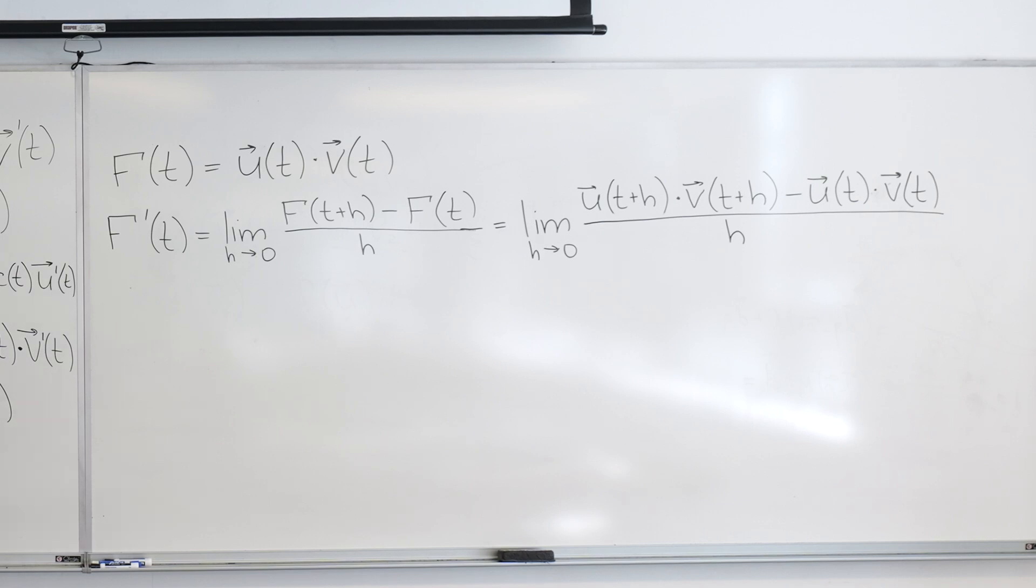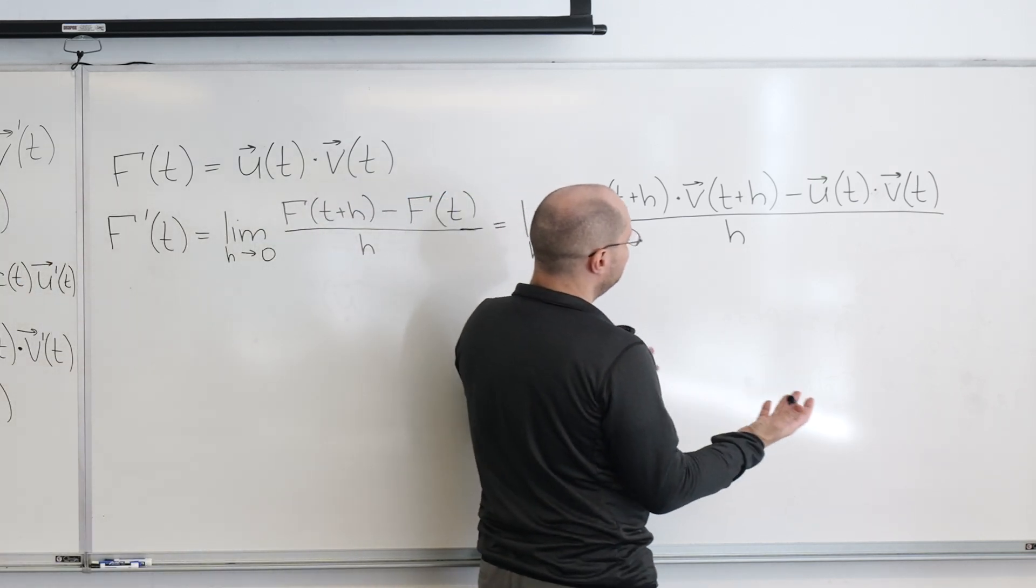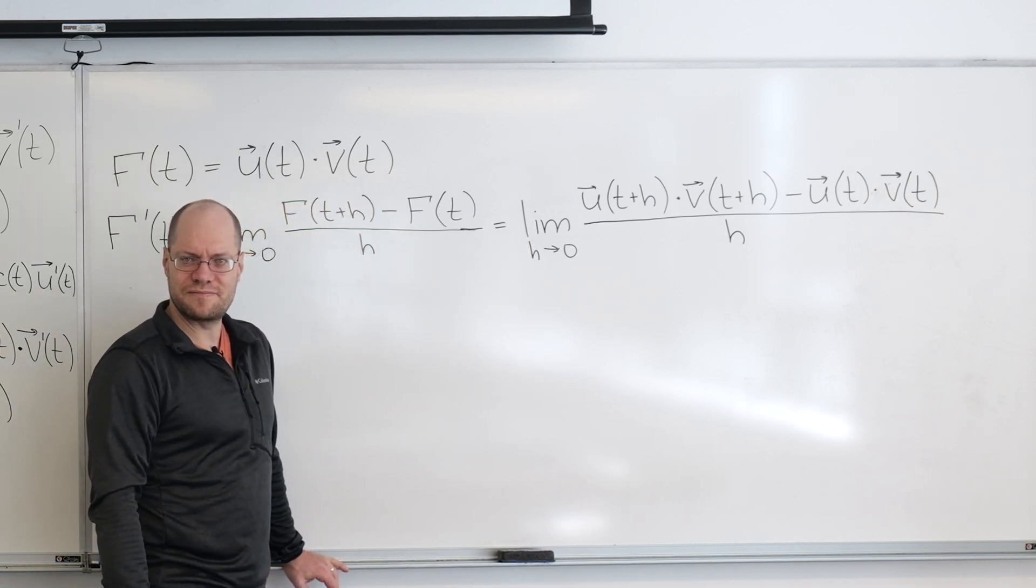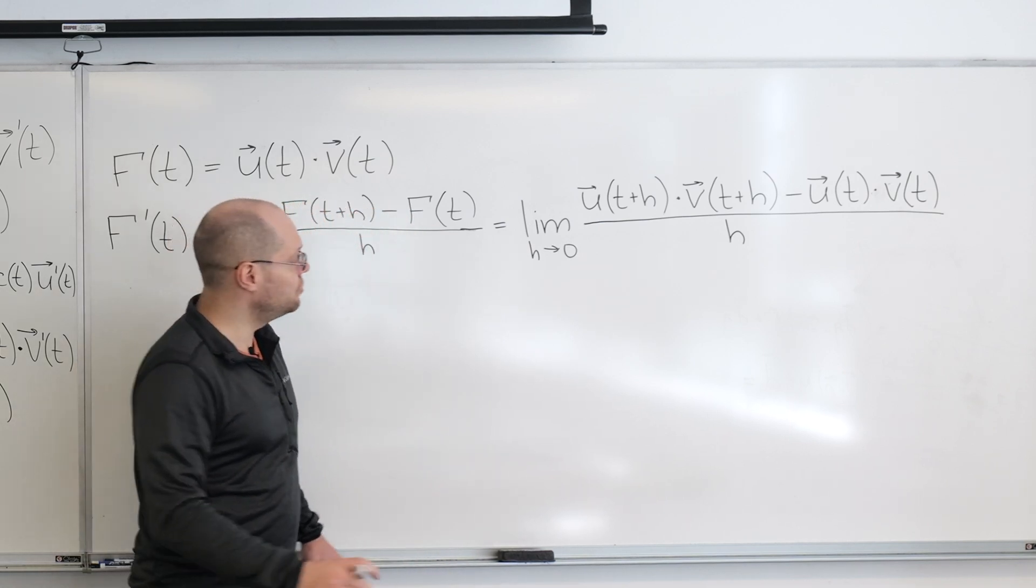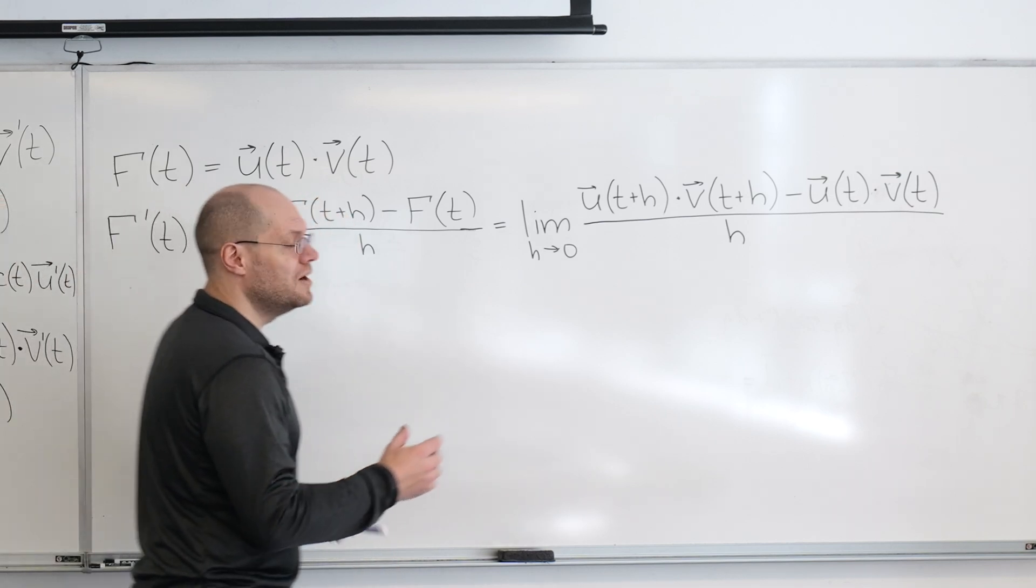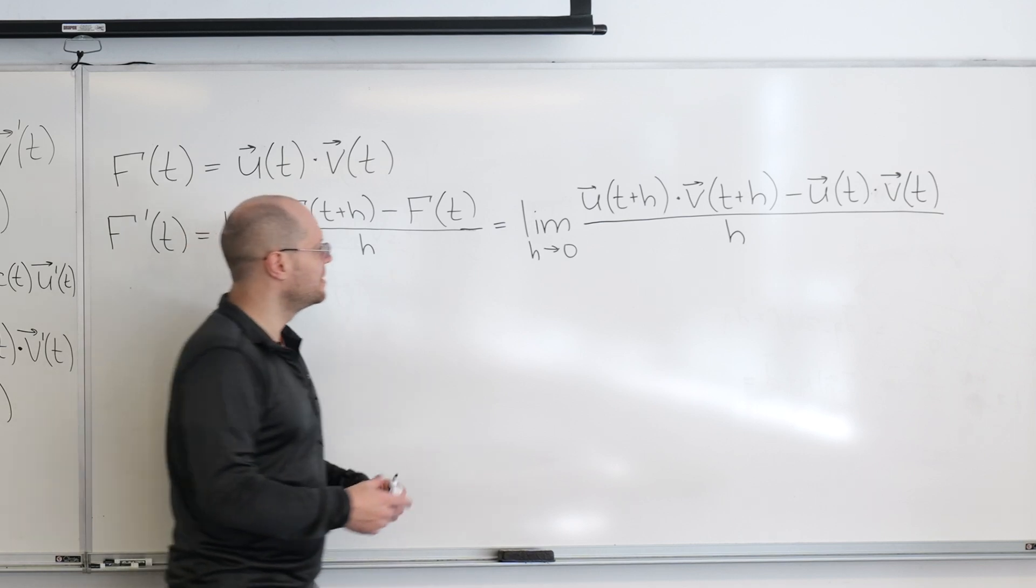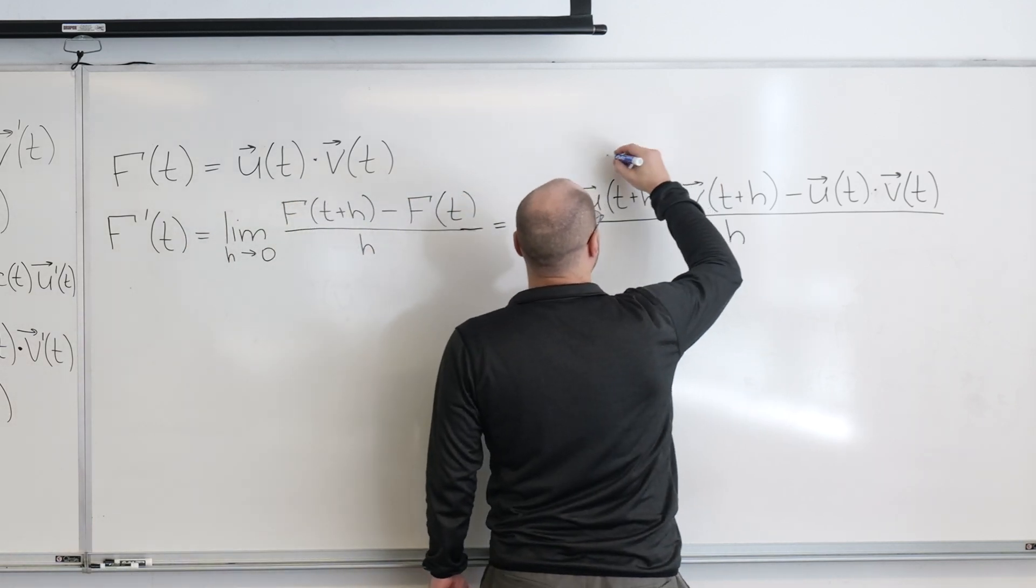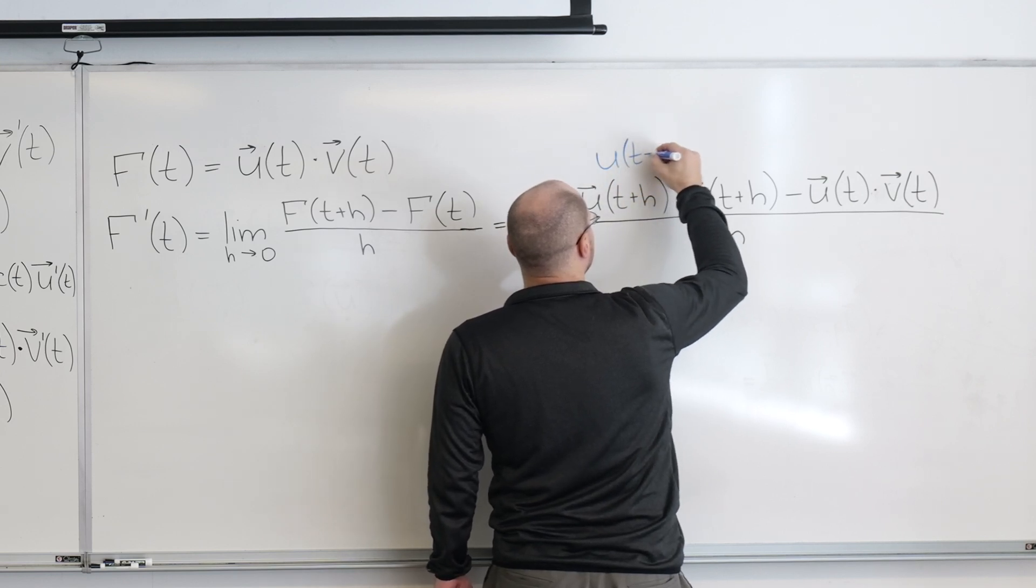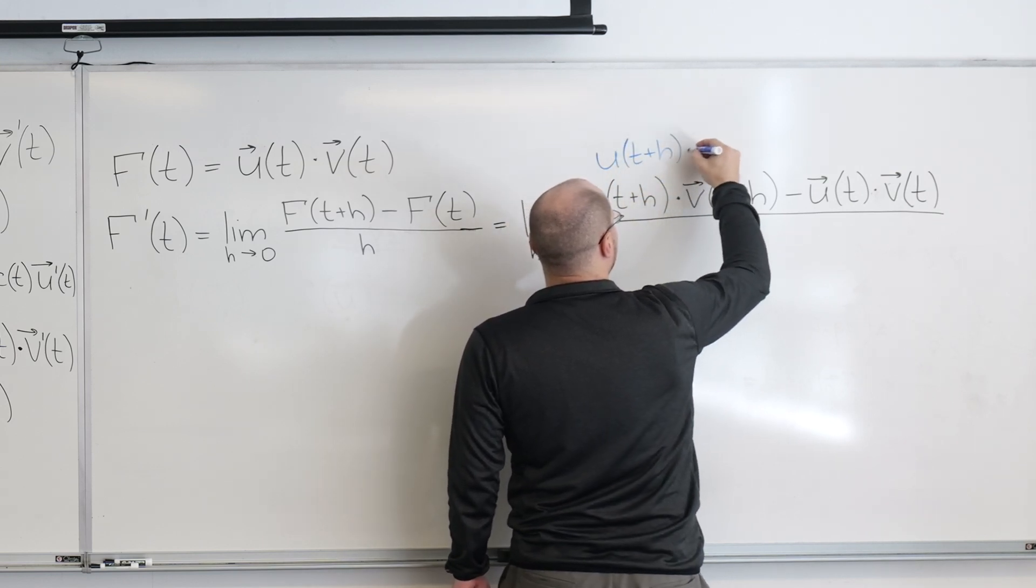Just no idea because you can't factor anything, right? There is just nothing you can do with this expression. So, you do a very, very creative thing. And you add and subtract the same term. And that term is... I'm just going to say that it's u times t plus h dotted with v.